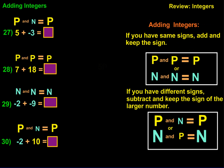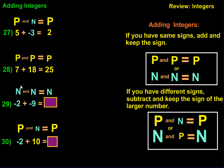Now let's take a look at adding integers. For number 27, we have 5 plus negative 3. We have a large positive and a small negative, so the answer will be positive. Since the signs are different, we're actually going to subtract them. So 3 from 5 is positive 2. For number 28, we have 7 plus 18 — a positive and a positive — so we simply add them and get a positive answer. 7 plus 18 equals 25.